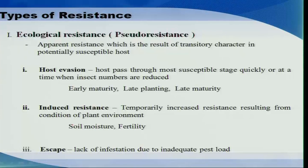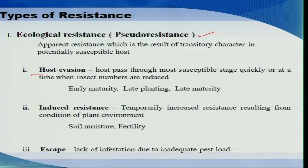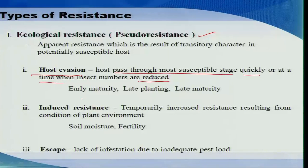Now let us look into the types of resistance exhibited by different plants. The first type is ecological resistance, also referred to as pseudo-resistance. This type of resistance is not an inbuilt or inherent character of the plant; rather, through certain ecological variation the plant somehow avoids pest attack. Among these, the first sub-type is host evasion, where the host passes through its most susceptible stage quickly or at a time when insect numbers are reduced — for example, plants with early maturity or those planted late that escape insect attack when pest populations are low.